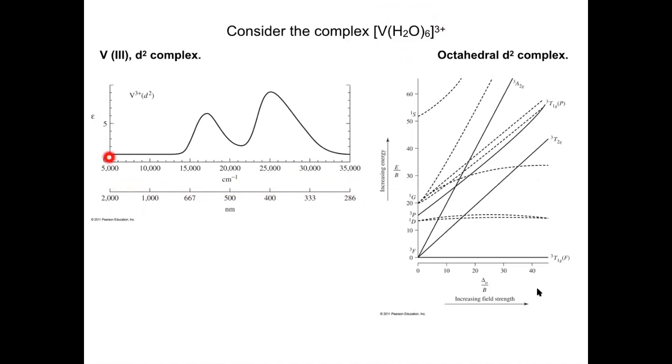The y-axis is extinction coefficient, so we can pull information directly about the type of electronic transition, as we talked about in the last lecture, directly from the peak height and extinction coefficient.